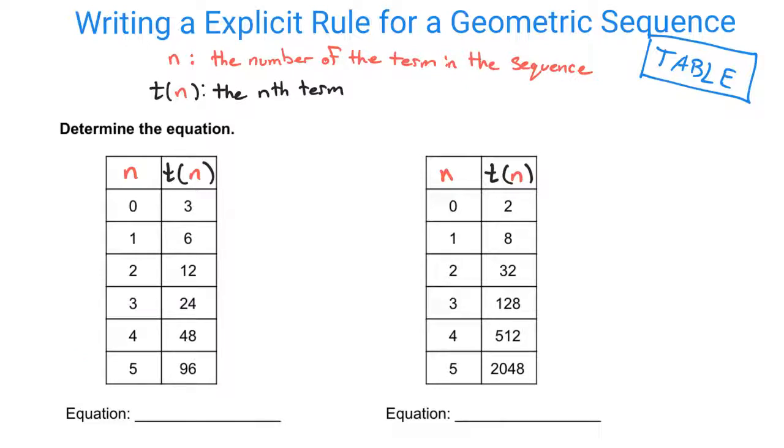We also take a look at our outputs, t of n. We have 3, 6, 12, and 24. Now in a geometric sequence, we need to look at what you do from one term to get to the next. And it should be the same multiplier every single time that you multiply one term to get the next.